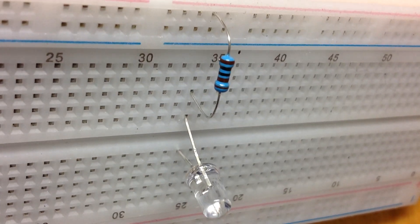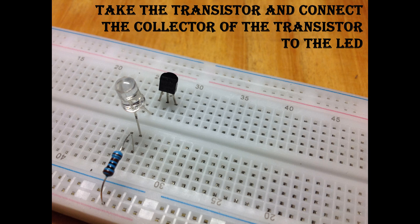Now get your transistor and connect the collector of the transistor to the negative lead of the LED.